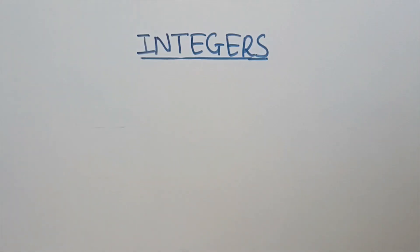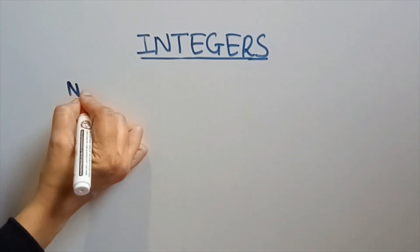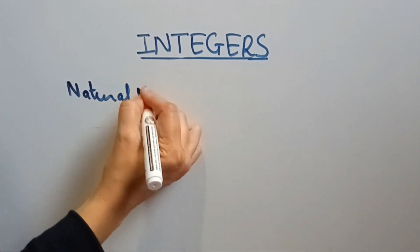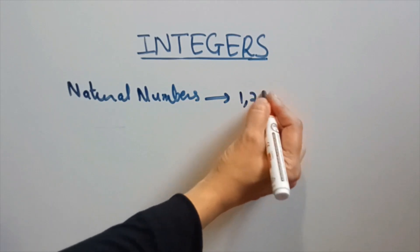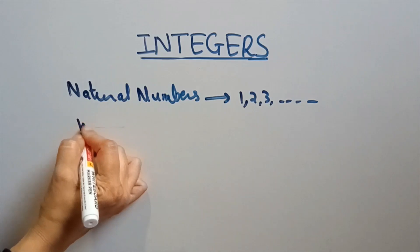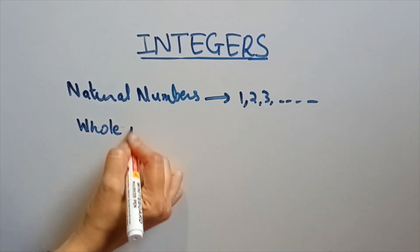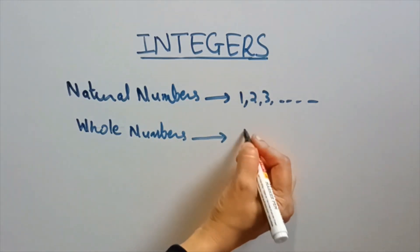Hello friends, welcome back to Shiwag Tutorials. Our today's topic is integers. Now, what are integers? Integers are nothing but positive numbers and negative numbers including 0. Now, what are positive numbers? We know that natural numbers are 1, 2, 3 and so on — all positive numbers up to infinity.